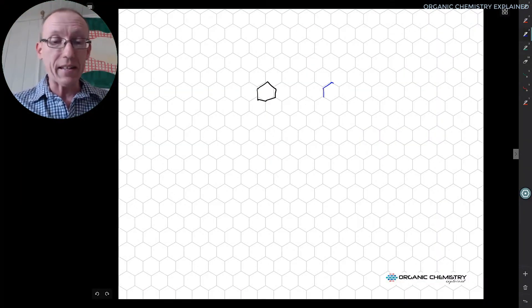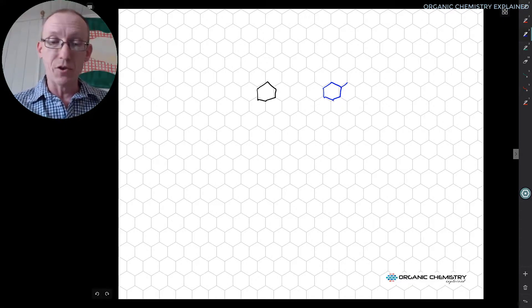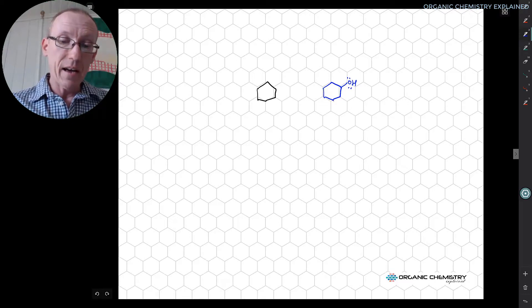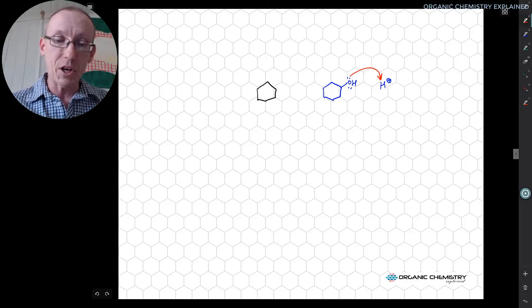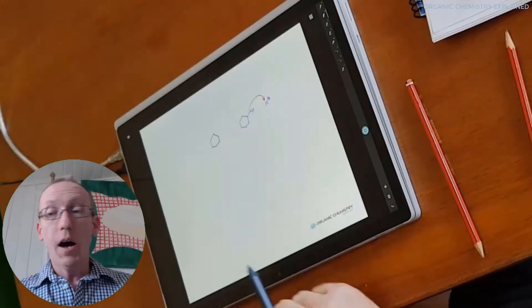And most all these annotation apps let you do things like use colors and let you draw. If you want to, you can then draw out things like mechanisms. So we can draw out a mechanism here and use different colors to show how this works.